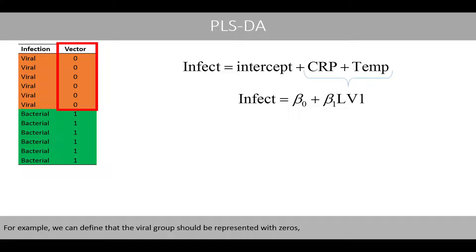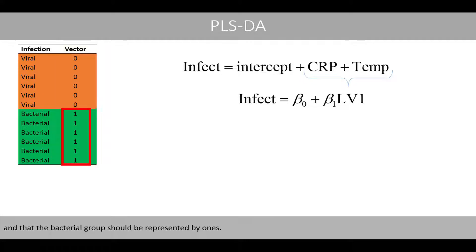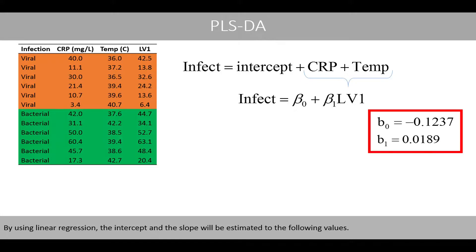For example, we can define that the viral group should be represented with zeros, and that the bacterial group should be represented by ones.